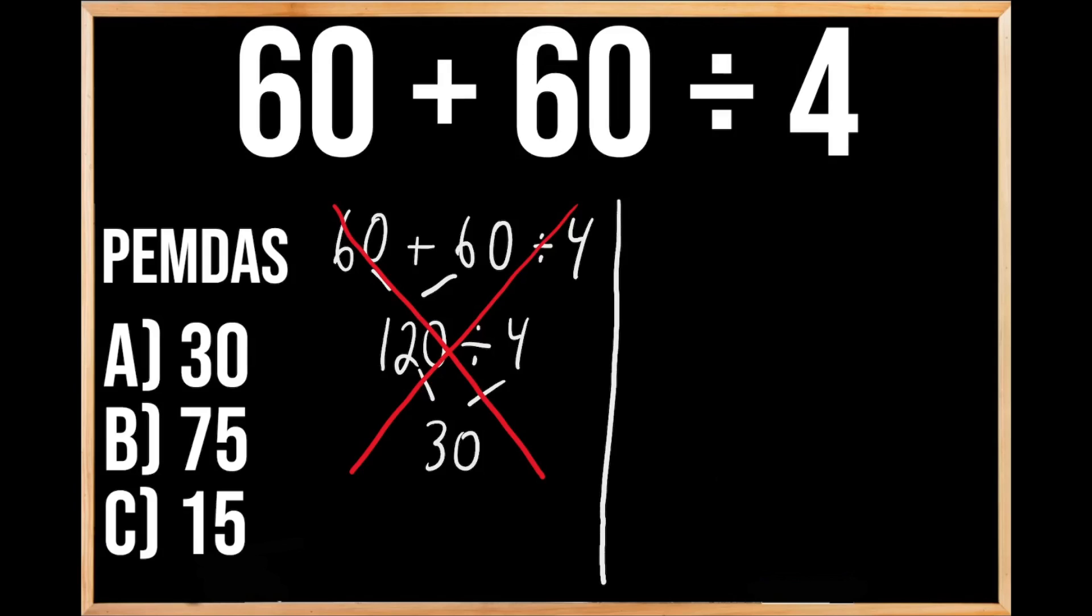Our original problem was 60 plus 60 divided by 4. So since we have multiple operations within this problem, we need to make sure that we're following the order of operations. And over on the left-hand side here, we can see the acronym PEMDAS, which stands for the order of priorities when solving problems just like this.